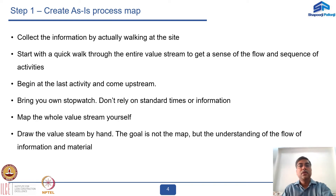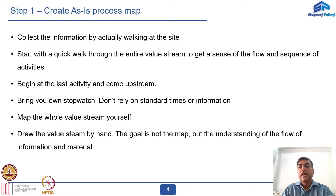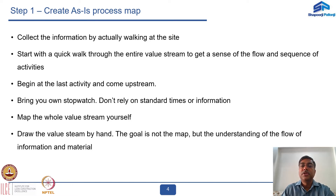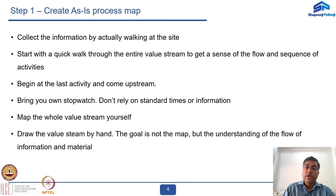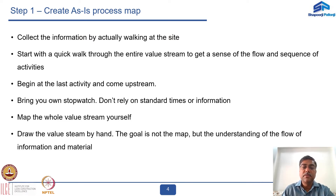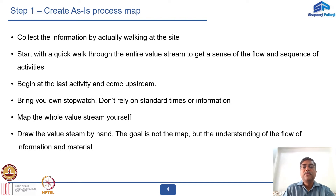Now let us look at step one, which is to create the as-is process map. We need to collect information by actually walking the cycle. Start with a quick walk-through of the entire value stream to get a sense of the flow and sequence of activities. Begin from the last activity and go to the first. Record your own timings with your own stopwatch — do not rely on standard times or information given by others. Map the whole value stream yourself; you can even draw it by hand. The goal is not how well you draw the map, but to understand the flow of information and material.